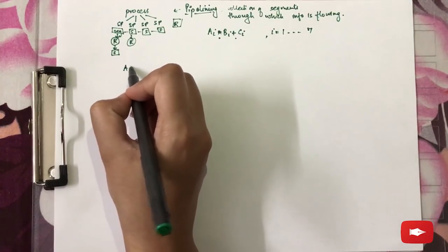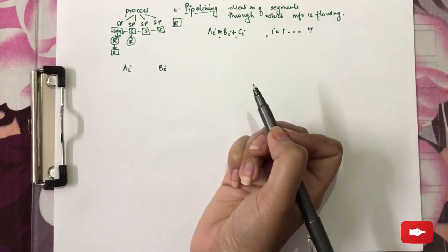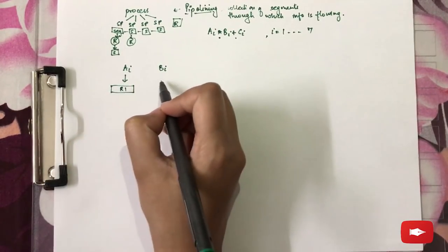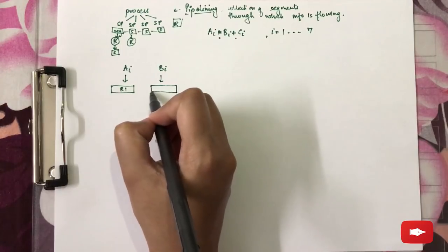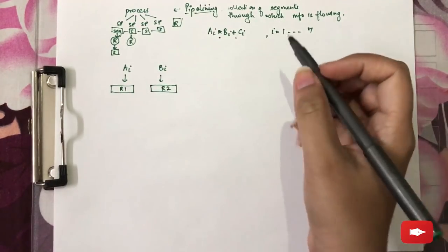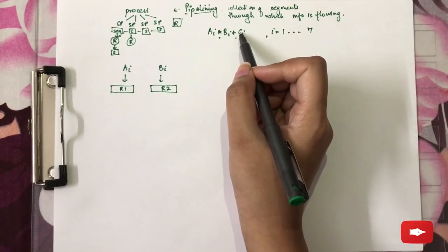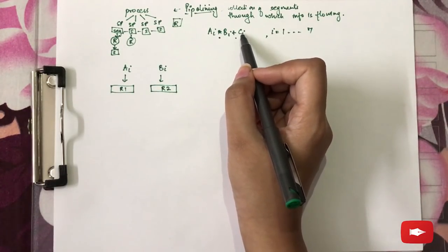What we are having is two operands ai and bi which are loaded into two registers simultaneously. Because first operation to be performed is the multiplication between a and b and the result is being added to ci.